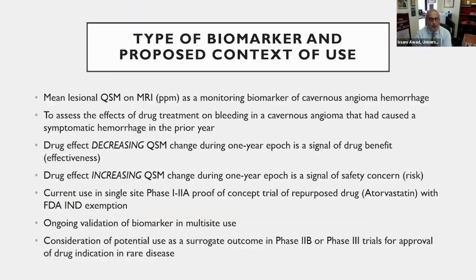What we are going to propose is that quantitative susceptibility mapping on MRI of the brain — and I will soon tell you what that is — can serve as a monitoring biomarker of hemorrhage in a lesion known as cavernous angioma. The goal is to assess the effects of drug treatment on bleeding in a cavernous angioma that has already caused a hemorrhage in the prior year and hence is a high-risk lesion destined to re-bleed. The drug effect could be decreasing the QSM change during a one-year epoch, which would signal drug benefit or effectiveness.